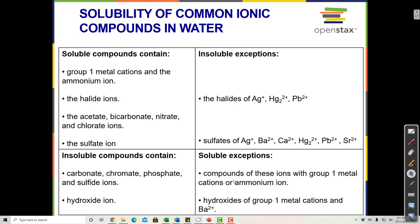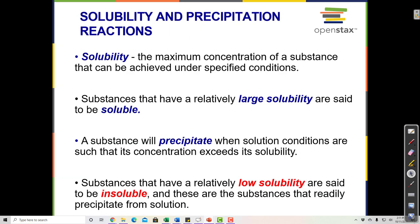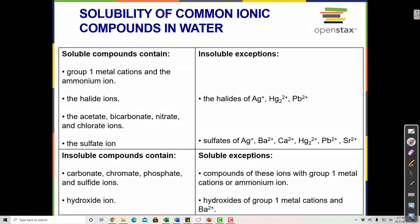Here are the solubility rules. Soluble compounds contain Group 1 metal cations — sodium, potassium, lithium, and so on — or ammonium; those are always soluble. Halide ions — chloride, bromide, iodide — are always soluble, except halides of silver, mercury, and lead are not soluble. For example, lead iodide, mercury iodide, mercury bromide, mercury chloride — all insoluble combinations.